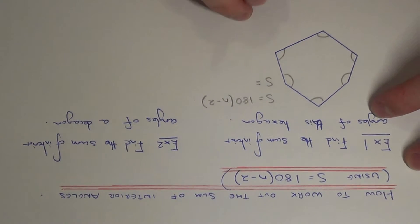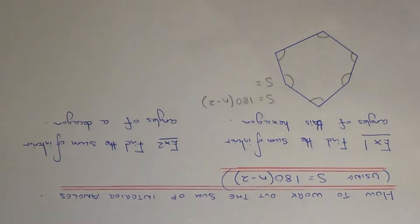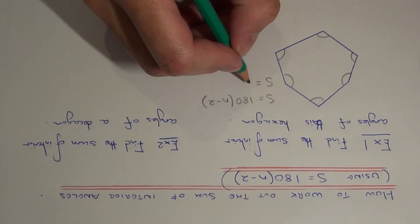So all we need to do then is substitute the amount of sides that we have on the hexagon. So a hexagon has 6 sides, so we're subbing N equals 6.